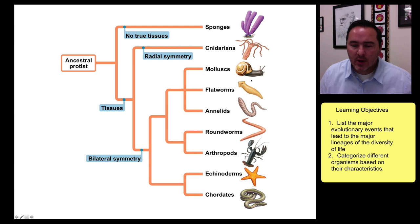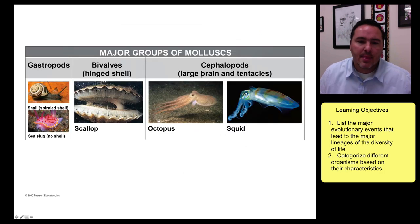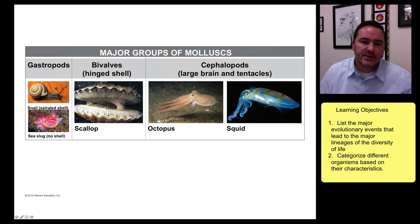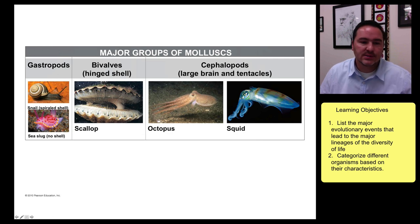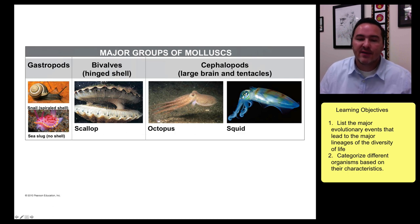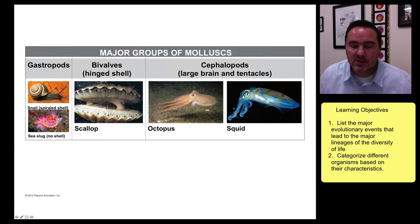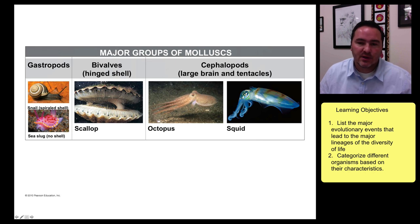Then we're going to look at the mollusks. Mollusks can be divided into main groups like the gastropods — snails and sea slugs — the bivalves, which are all the hinged-shell organisms like scallops, and then the cephalopods, such as octopus and squid.